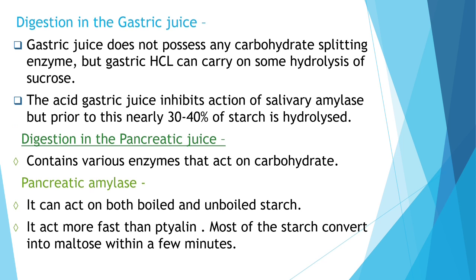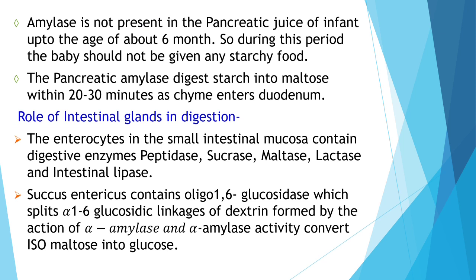Digestion in pancreatic juice: pancreatic juice contains various enzymes that act on carbohydrates. Pancreatic amylase can act on both boiled and unboiled starch; it acts faster than ptyalin and converts most starch into maltose within a few minutes. Amylase is not present in pancreatic juice of infants up to about 6 months, so during this period the baby should not be given starchy food. Pancreatic amylase digests starch into maltose within 20 to 30 minutes as chyme enters the duodenum.